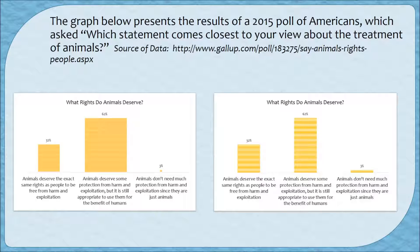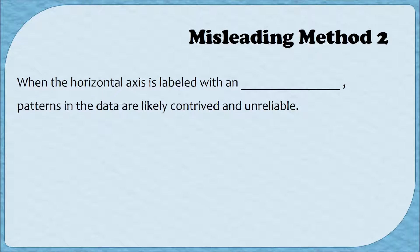Let's compare these two graphs side by side to see what an impact this has. In the graph on the left, that 62% definitely looks way larger than the 3%, and much larger than it should. In the graph on the right, while the 3% is definitely the smallest bar, you can actually see it. A second way that graphs can mislead is when the horizontal axis is labeled with an inconsistent scale, which puts a pattern to the data that may or may not naturally be there, so you can't really trust the trend being shown.